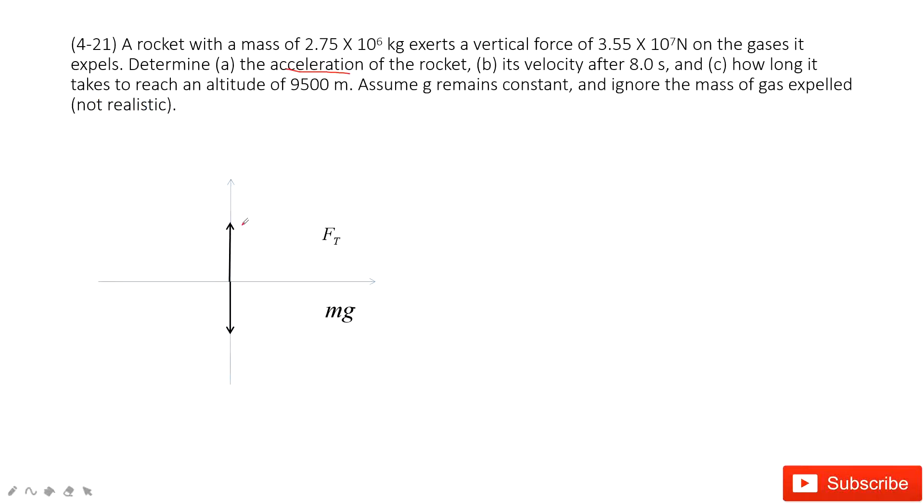The next one asks you to find its velocity after a certain time, 80 seconds. And then, also ask you to find the time for a given displacement. So in this one, this becomes easy. This is Newton's second law, but B and C are chapter 2, the motion of the object in one direction. Do you agree?